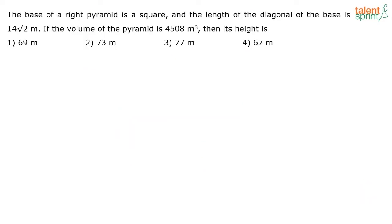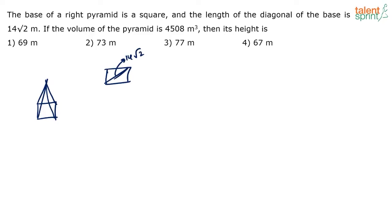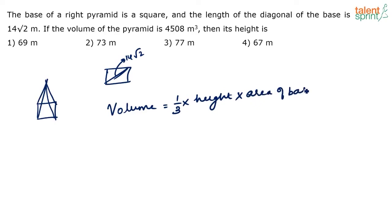Next problem: the base of a right pyramid is a square, and the length of the diagonal of the base is 14√2 meters. If the volume of the pyramid is 4508 cubic meters, then what is its height? The volume of a pyramid equals (1/3) × height × area of base. Volume is 4508, so 4508 = (1/3) × height × area of base.